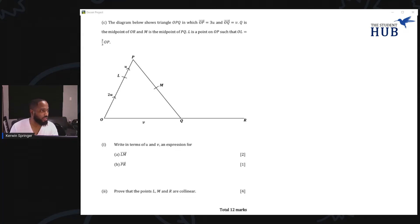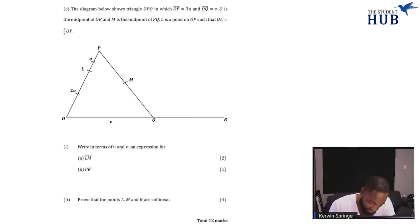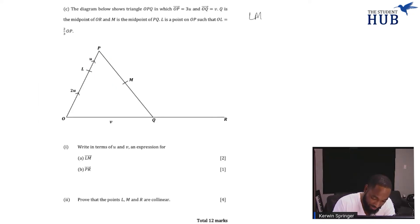This is the vectors question from January 2021. Write in terms of u and v an expression for LM. Immediately I can see LM is this to this. To figure out this route we need to go LP first, so I can deduce that LM, the vector LM, is really LP then I need to add on PM.